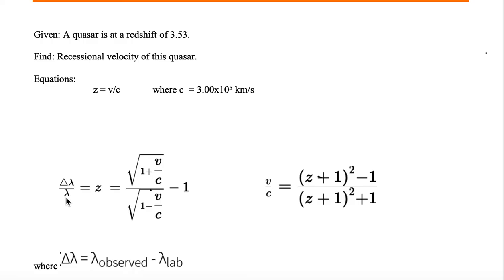We're given z is equal to delta lambda over lambda. z is equal to the square root of 1 plus v over c divided by the square root of 1 minus v over c minus 1. And v over c is equal to parentheses z plus 1 squared minus 1 divided by parentheses z plus 1 squared plus 1.